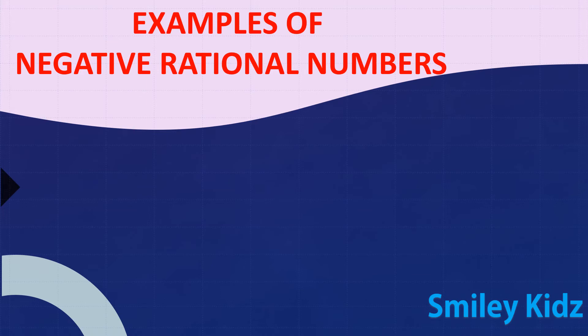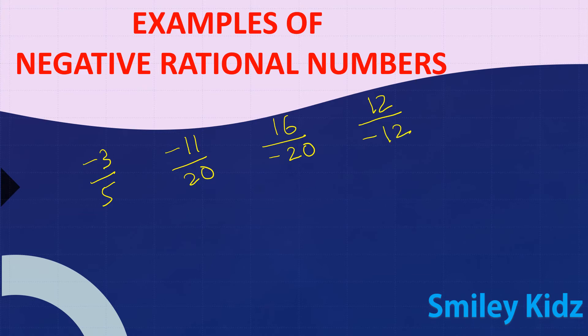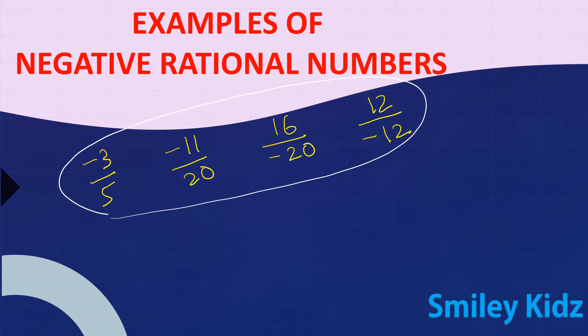Let's see a few examples of negative rational numbers: minus 3 by 5, minus 11 by 20, 16 by minus 20, and 12 by minus 12. All these are negative rational numbers because there is a negative sign either on the numerator or on the denominator. That's why all these rational numbers are negative rational numbers.